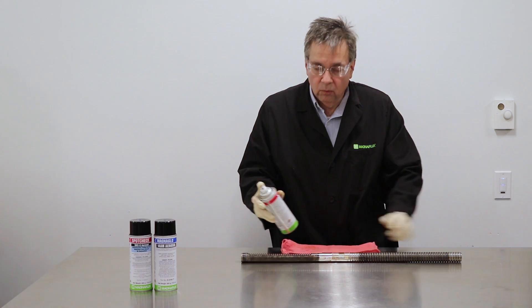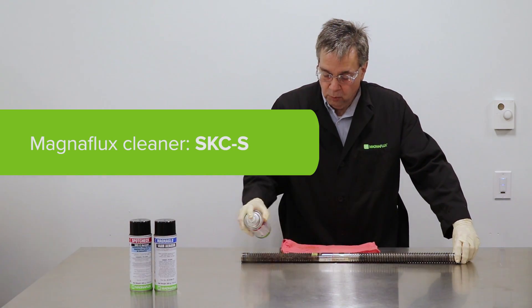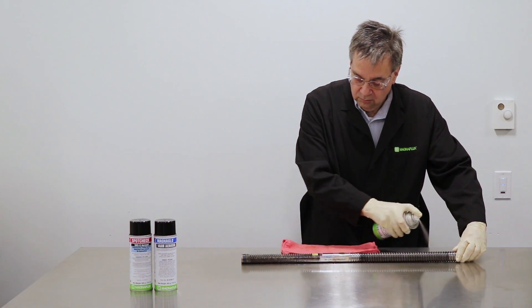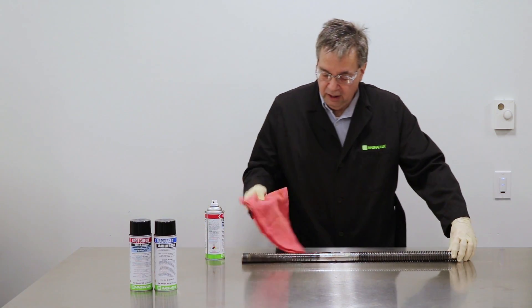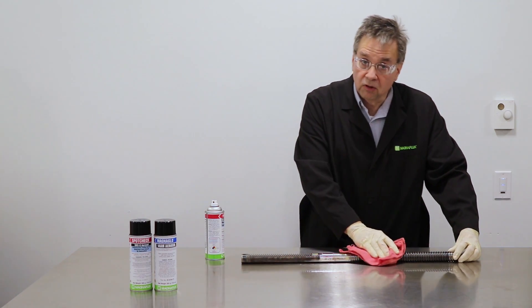A very simple, easy way to do it is using MagnaPlex SKCS cleaner. Spray the part completely and then wipe off any grease and oils that are on the part. There are other methods suitable for cleaning the part.